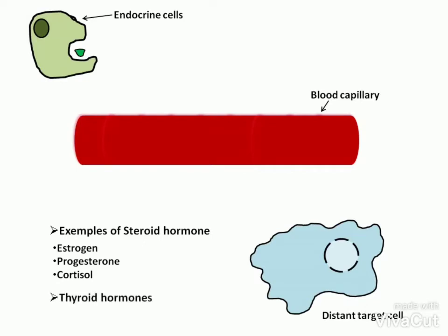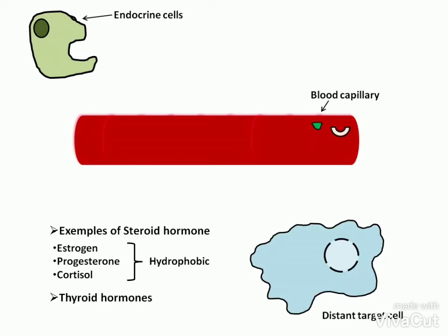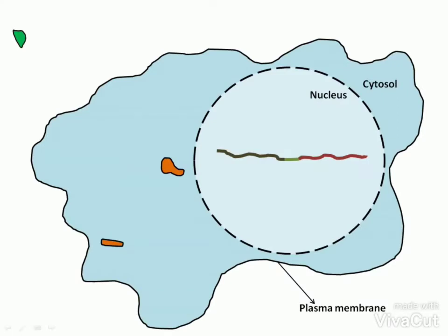These hormones are too hydrophobic to dissolve readily in the blood. So the hormones are transported on specific carrier proteins in the blood capillary and released to the extracellular space of the target cell. Then the hormone binds to the serum binding protein.